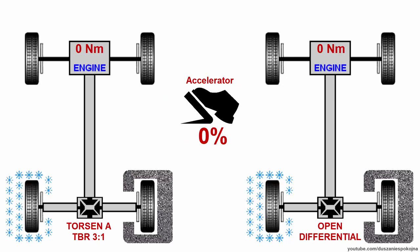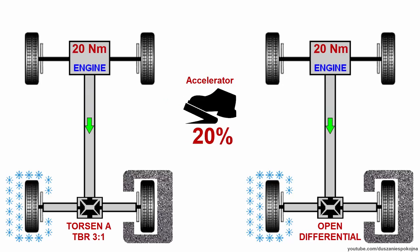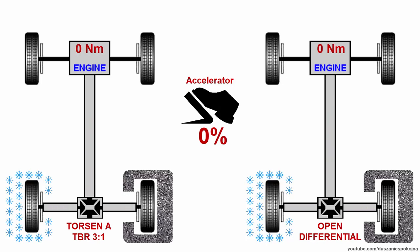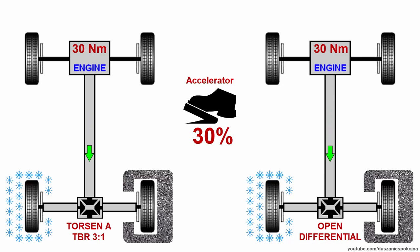At first you are pressing the accelerator pedal gently, like 20%. The engine creates 20 Nm which go through the shaft to the rear differential, and there it is divided to left and right — equally, 10 to the left and 10 to the right. Now pressing harder, like 30%: the engine creates 30 Nm, so 15 to the left and 15 to the right. Still the same torque split for Torsen and open diff because the limit value for the wheel on snow is not exceeded.